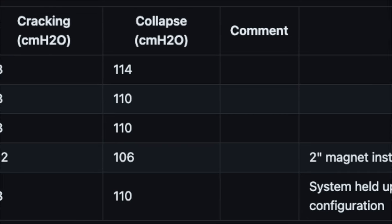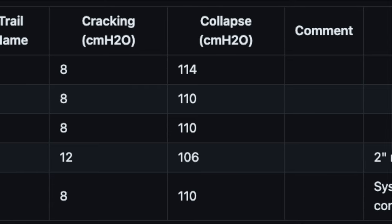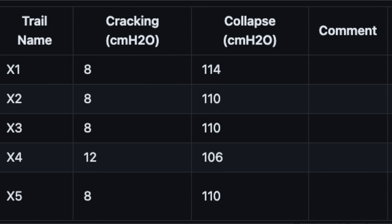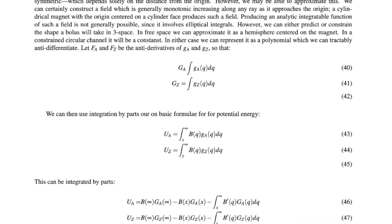By making the bolus smaller than the majority of the magnetic field, your bolus can act as a counterweight to itself. That is, the potential energy increases as the fluid is driven out of the channel inward towards the center of the field.